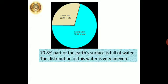Before studying precipitation, let's recall some points. First of all, 70.8 percent part of the Earth's surface is occupied by water, but the distribution of this water is uneven.